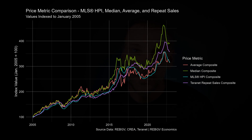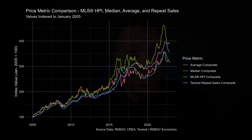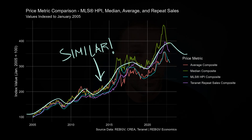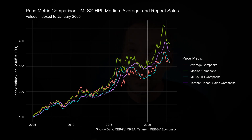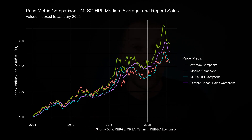It's probably worth visualizing the differences between these price metrics. Here's a plot of what these price metrics look like using composite prices with their values indexed to 2005 so we can compare them more easily. Looking at the plot, you might notice that all of these price metrics tell a pretty similar story, but there are also some clear differences. Each metric reports different growth rates at every point in time, and the reason behind that has everything to do with the way these metrics are constructed.